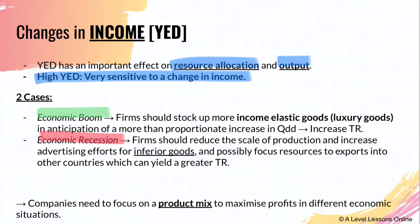During an economic boom, incomes are rising, so firms should stock up on income elastic goods such as luxury goods (YED > 1, positive income elastic). This is in anticipation of a more than proportional increase in quantity demanded, which will increase overall total revenue. An increase in the quantity stocked of this income elastic good will lead to a more than proportional increase in quantity demanded when income rises.